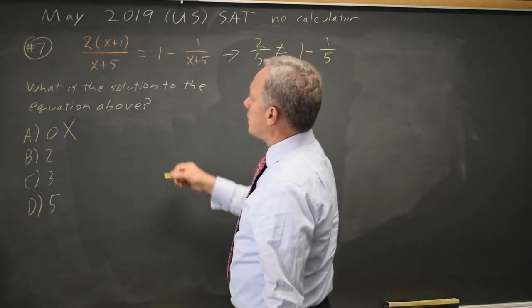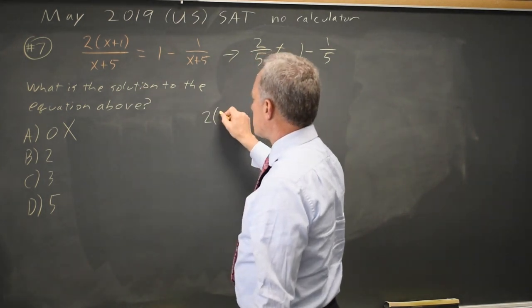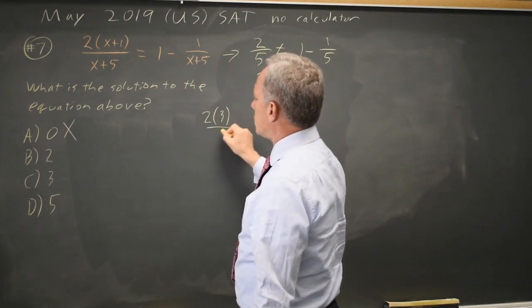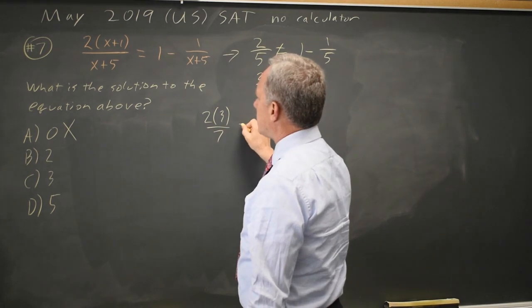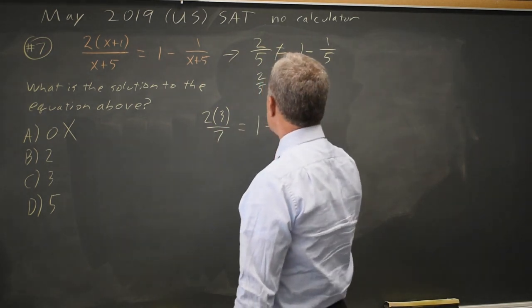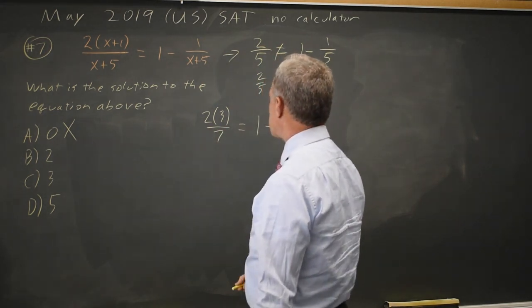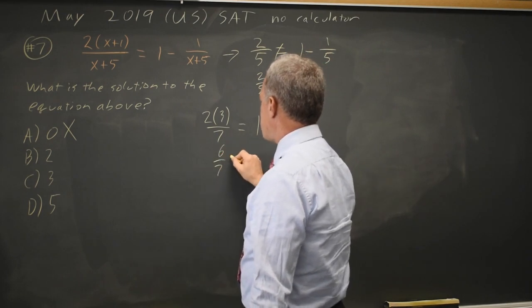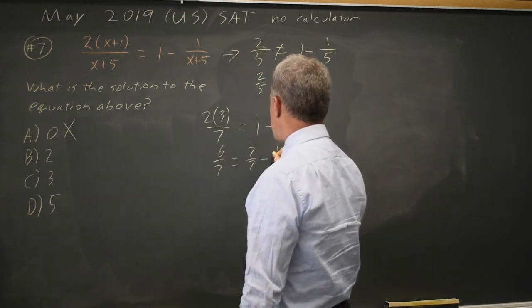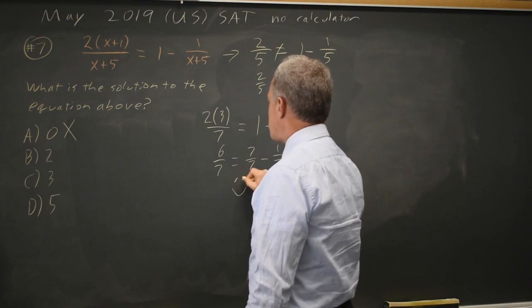How about choice B? At x equals 2, this is 2 times 2 plus 1 is 2 times 3, over 2 plus 5 is 7. I'm asking, is that equal to 1 minus 1 over 2 plus 5, which is still 7? 6 over 7 equals 7 over 7 minus 1 over 7? That is true.